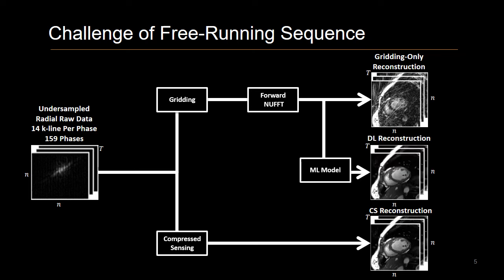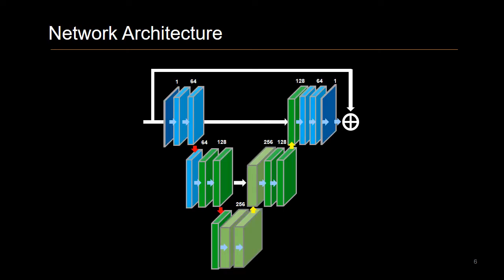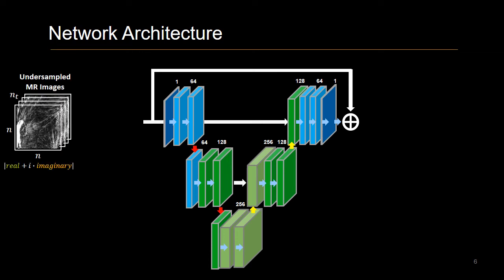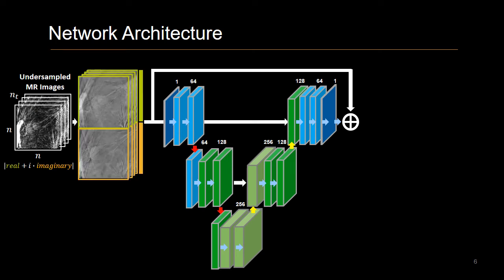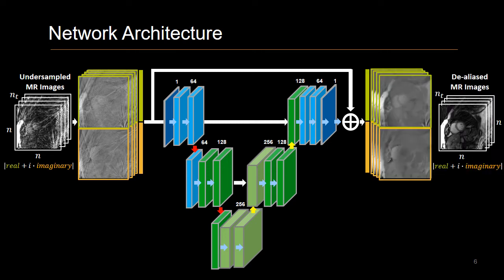We propose an ML model which takes the streaking-artifact-infected images as input and produces streaking-free images comparable to those produced with compressed sensing. To achieve this, we trained our model using the state-of-the-art UNET, which is comprised of an encoder and decoder with skip connections. The aliased images were fed into the network with the real and imaginary components concatenated to enable real-value processing of complex data. The fully sampled images were used as labels.